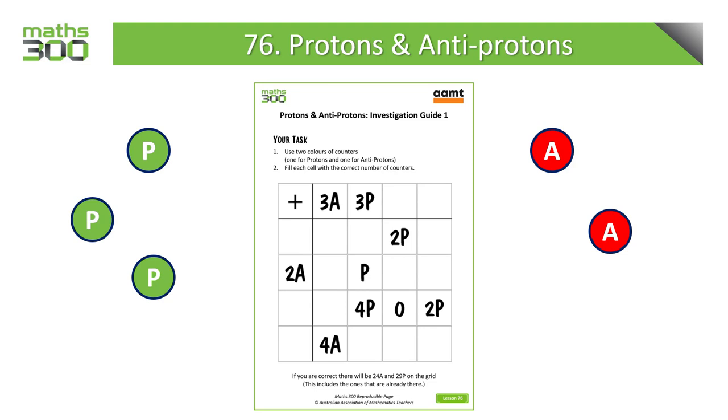In this first example, we're looking at what happens when three protons are combined with two antiprotons. This would give us two zero pairs and a single proton left over, which we record in the table as shown.